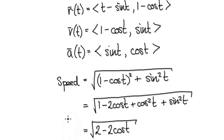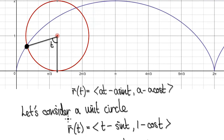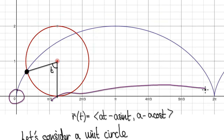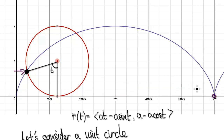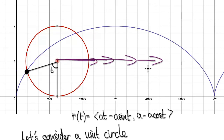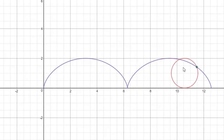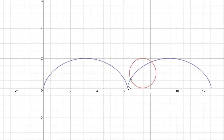What that means is when t equals 0 — which is the same as when t equals 2π — the speed at this point is zero. So it's kind of strange: the circle is always moving to the right, but this particular point on the circle is actually stationary right at that point, even though the circle is always moving to the right.